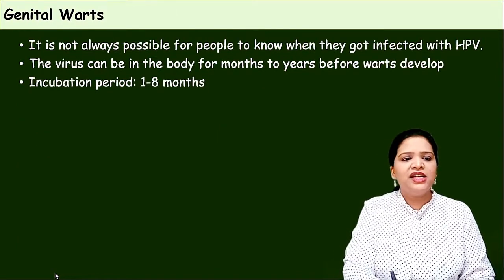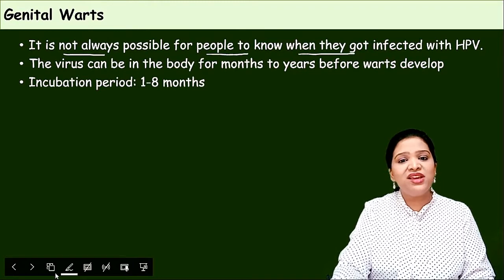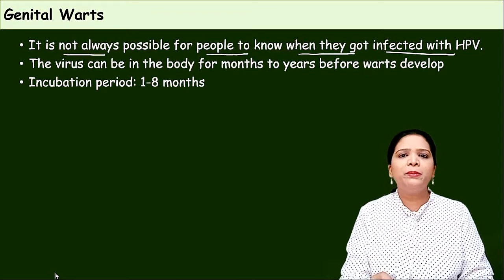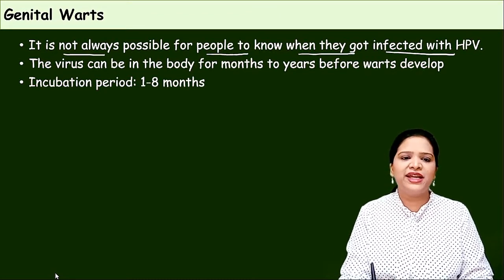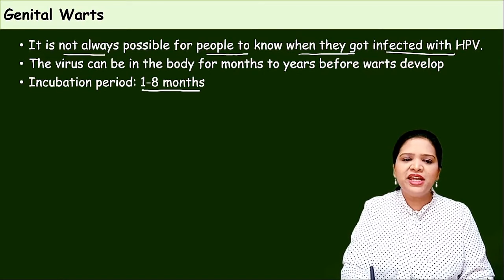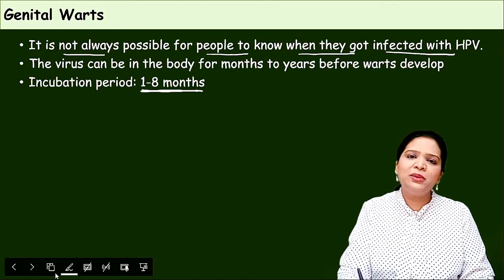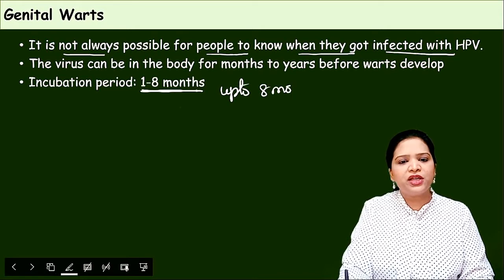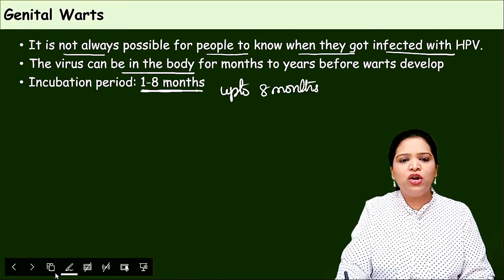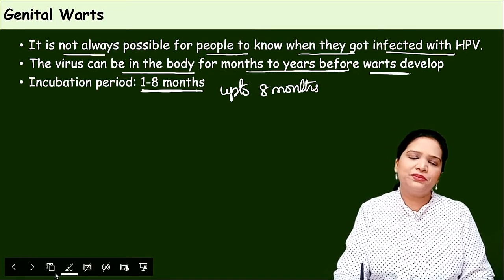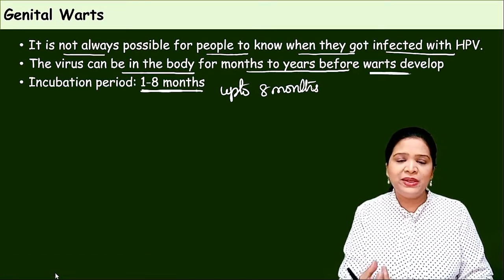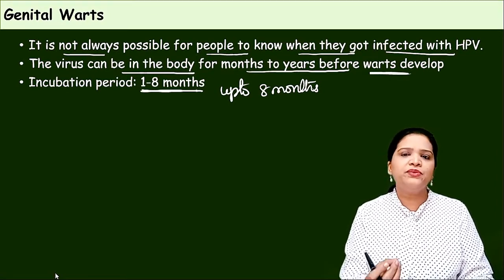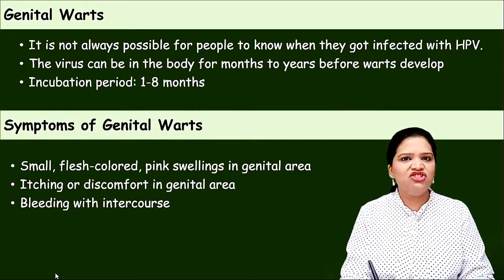It is not always possible for people to know when they got infected with papillomavirus, because it starts like a small pimple and slowly multiplies into a cauliflower-like appearance. The incubation period varies — for some people less than one month, for others two or three months, up to eight months. For some people the virus can be in the body for many years before the warts develop.